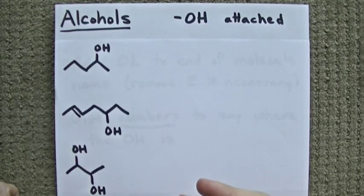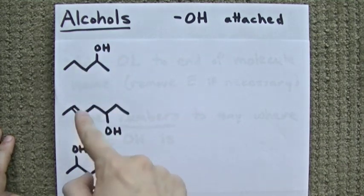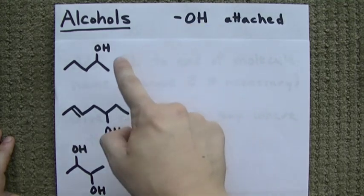Alright guys, number three in my series on organic naming, we have alcohols. These are carbon chains, single, double, or triple bonds, I don't care, with OH attached to it.